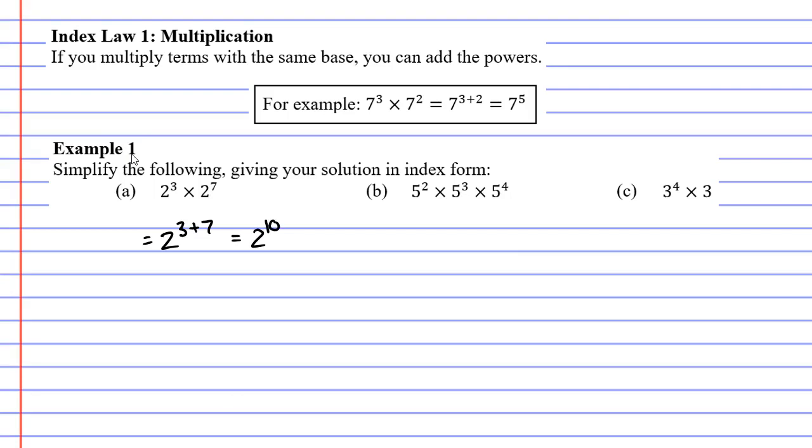Now looking at question B, we're doing it 3 times, but that's okay, we still just add the powers. So our base number is 5, and we add up our 2, our 3, and our 4, which gives us 5 to the power of 9.